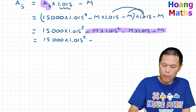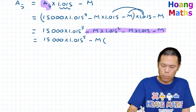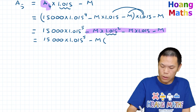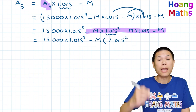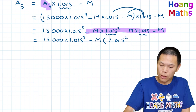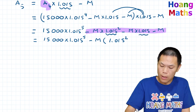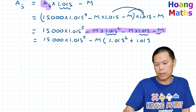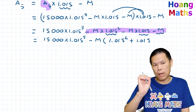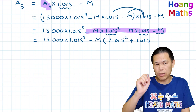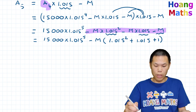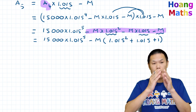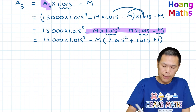Factoring out negative M, the series becomes: −M(1 + 1.015 + 1.015^2). Rewriting in ascending order, A5 = 15,000 × 1.015^5 − M(1 + 1.015 + 1.015^2).